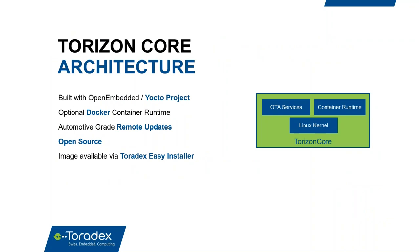In short, Torizon is a very minimal Linux kernel built with the Yocto project. Its main features are the Docker engine, which provides a container runtime, and an over-the-air update client that is automotive-grade. Most importantly, all software built into Torizon is open source. Torizon itself can be easily installed onto any compatible Toradex module using our Toradex Easy Installer, which comes pre-installed on all our modules.